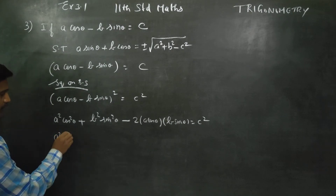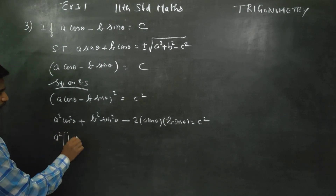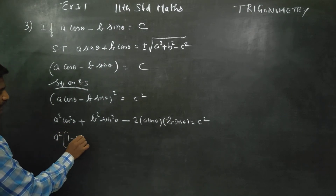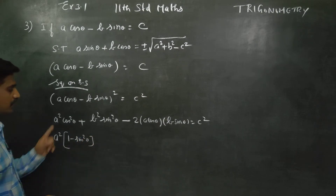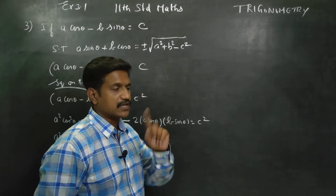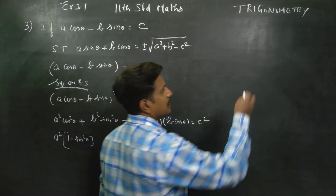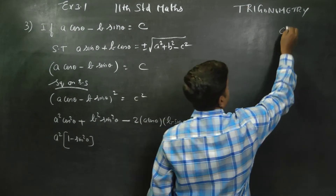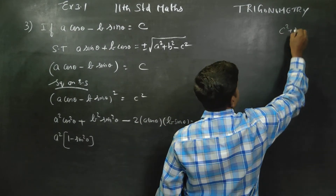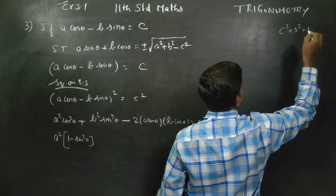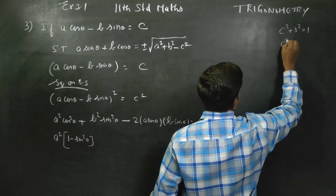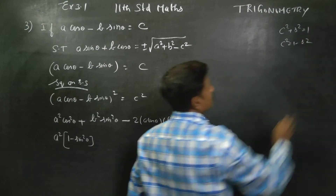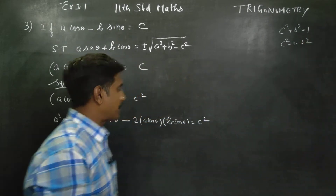Now I will use the trigonometric identity: cos square theta plus sin square theta is equal to 1. From this, cos square theta is equal to 1 minus sin square theta, and sin square theta is equal to 1 minus cos square theta.